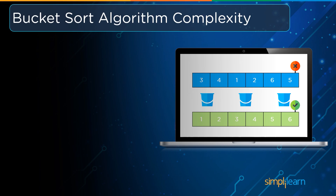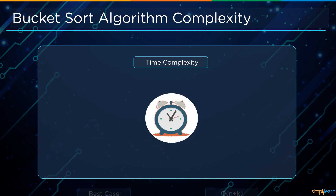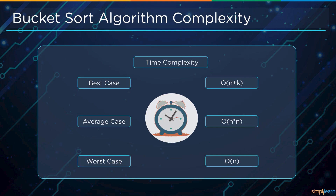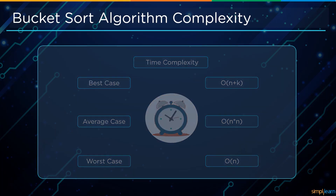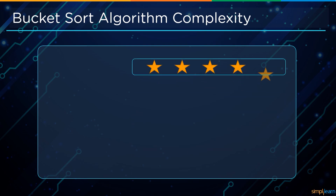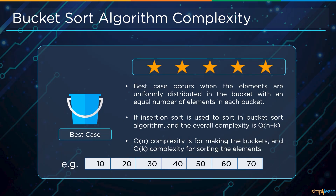Next we will learn about the complexities of bucket sort algorithm, starting with time complexity. There are three cases: the best case is O(n + k); the average case is O(n × n); and the worst case is O(n²). Here n is the total number of elements to be sorted and k is the number of buckets. The best case occurs when all elements are uniformly distributed in the buckets with an equal number of elements in each. Using insertion sort, overall complexity is O(n + k) — O(n) for making the buckets and O(k) for sorting all elements.